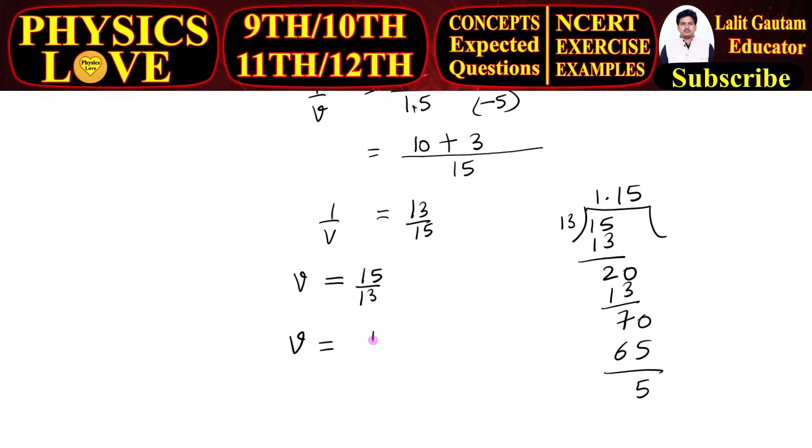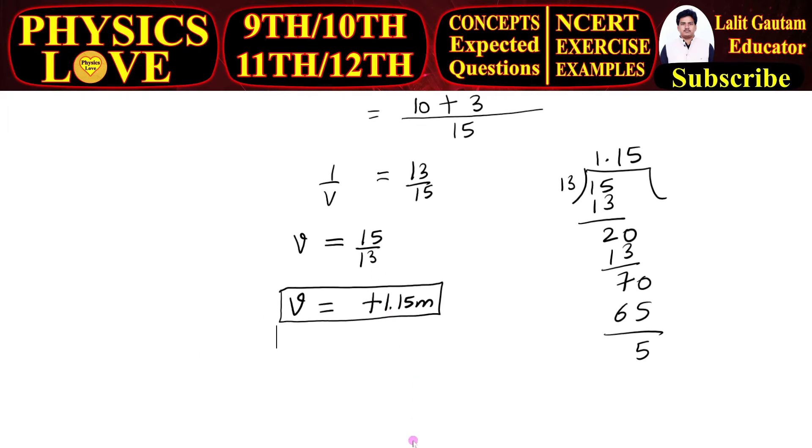You can use calculator but no need, you have to write only up to two decimal places. So v is equal to plus 1.15 meter. This is the value of image distance. Now we know the value of image distance and after that we will find out the value of height of the image.